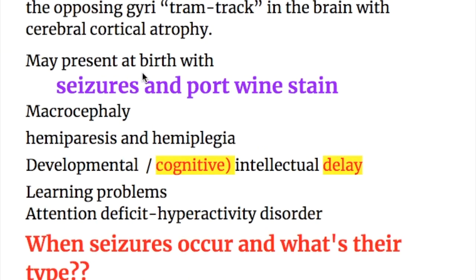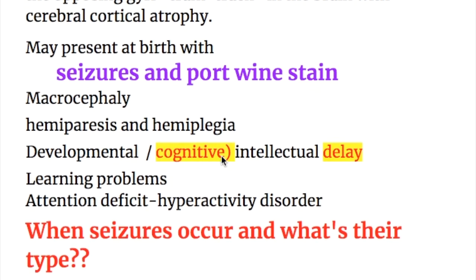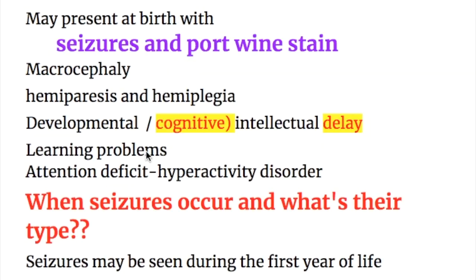The condition may present at birth with seizures and port wine stains. There is macrocephaly, hemiparesis or hemiplegia, developmental cognitive and intellectual delay, and learning problems with attention deficit hyperactivity disorder.